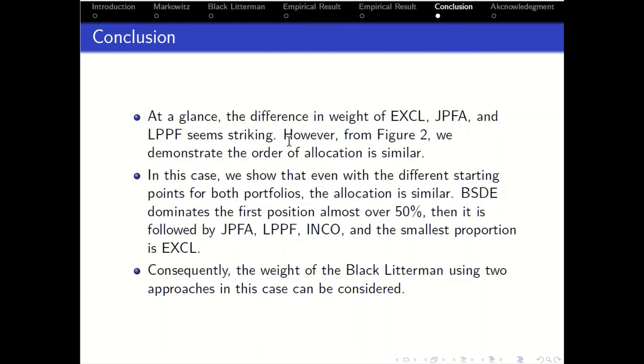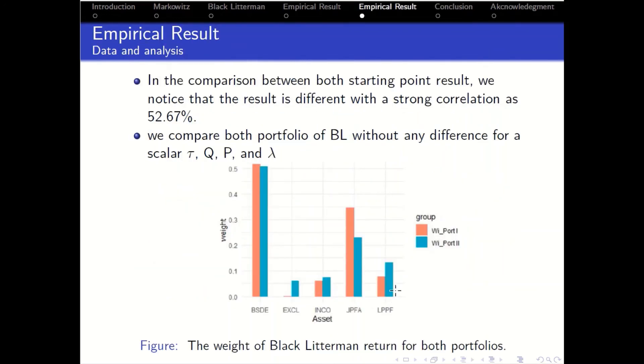However, we demonstrate that the order of allocation is similar. BSDE dominates the first position almost over 50 percent, then followed by JPFA, LPPF, INCO, and EXCL for both portfolios.